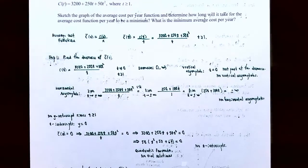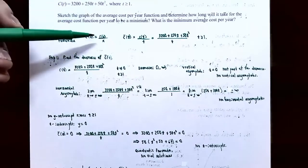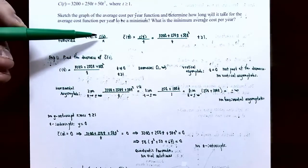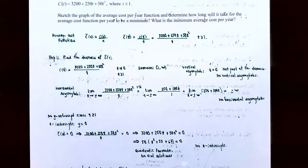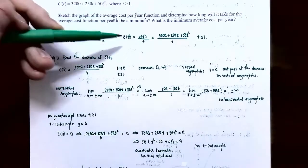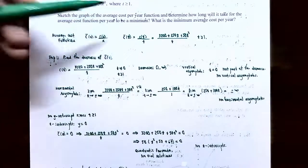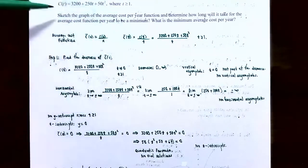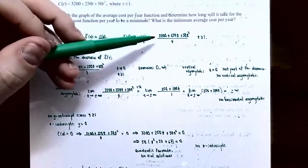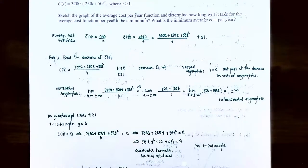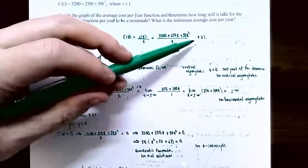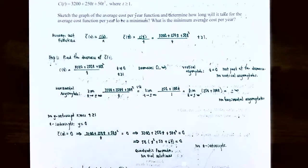One important thing to realize before applying the curve sketching summary is that we need to graph the average cost function. C(t) is not the average cost function — it's just the cost function. So we need to construct the average cost function first. C̄(t) is defined as C(t) divided by t. So take the cost function, 3200 + 250t + 50t², and divide everything by t. Keep in mind that t must be greater than or equal to 1.